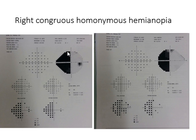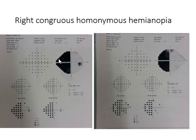In this field test you can see the field defect on the temporal side in the right eye — you can see the blind spot here — and on the nasal side on the left side. This is homonymous hemianopia because half of the field is gone. This is called right homonymous hemianopia because the right temporal field of vision is affected.